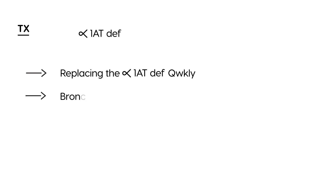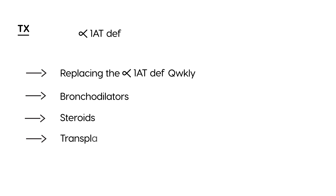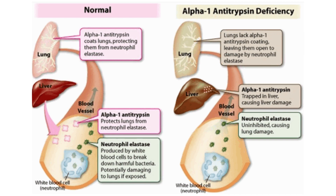Other treatments that help the respiratory component include bronchodilators and steroids, the same way you would treat emphysema or COPD. In the most extreme cases, a lung or liver transplant may be needed. Patients should also avoid smoking, which exacerbates lung damage, and avoid alcohol, which worsens liver damage.